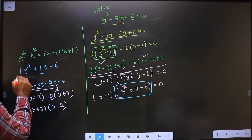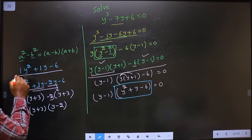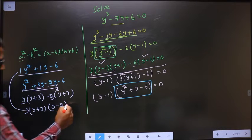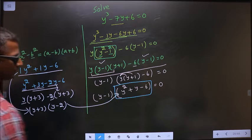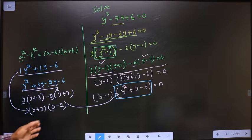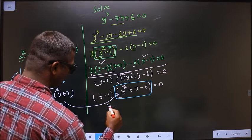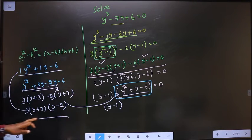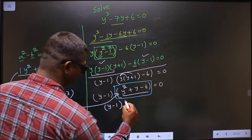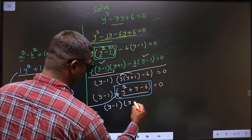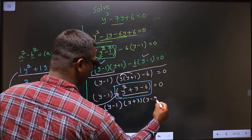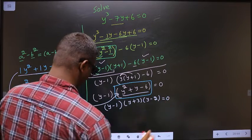Now, in place of this quadratic equation, I replace this over here. So y minus 1, and in place of the quadratic, I now write y plus 3 times y minus 2 equal to 0.